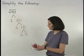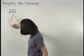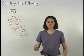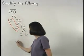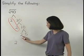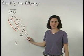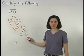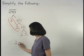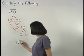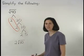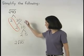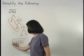So we have a pair of 2s, which means that a 2 can come out of the radical. And we have a 2 and a 5 that don't pair up, which means that a 2 and a 5 stay inside the radical, multiplying together to make 10. So the square root of 40 simplifies to 2 root 10.